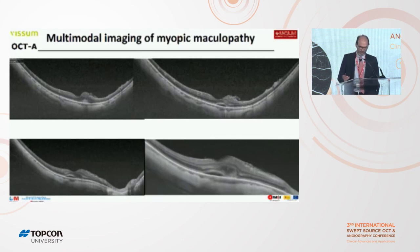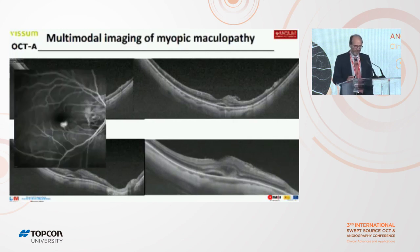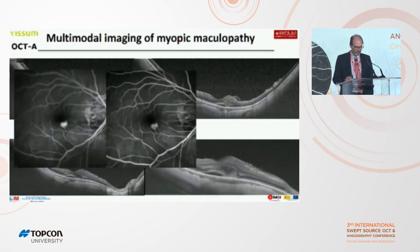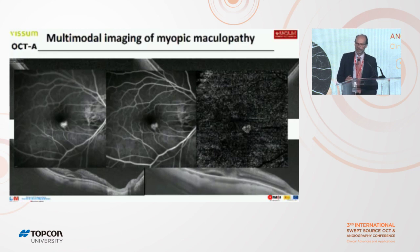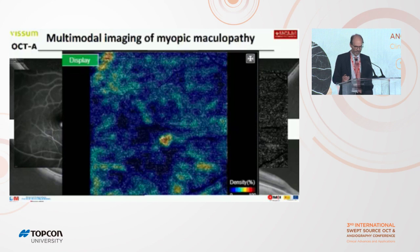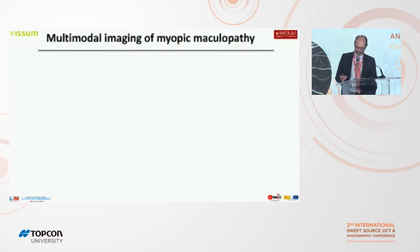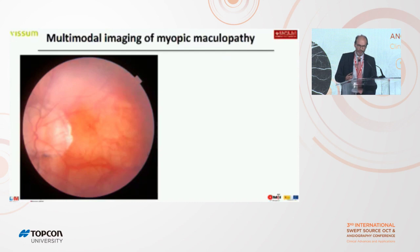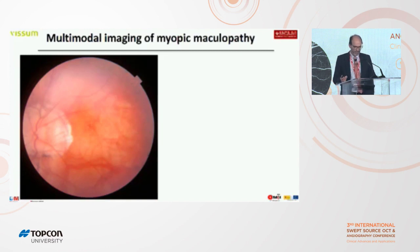Another case with myopic choroidal neovascularization shows a small quantity of fluid in the retina. This is a classical angiography of this patient, and this is the image obtained with OCT-A — exactly the same shape, the same size, without dye in a very few seconds. We can also obtain the density of the vessels of these lesions. If we perform the classification of myopic maculopathy only with fundus photography, in my opinion we can miss a lot of pathology. For this reason, I think it is necessary to perform multimodal imaging.